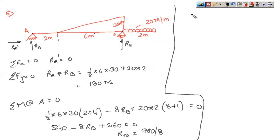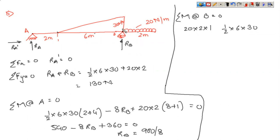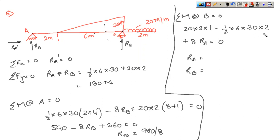Verification by taking moment about point B: the UDL 20 into 2 into 1 is clockwise so positive; the UVL half into 6 into 30 resolved at 2 meters from B is anti-clockwise so minus; plus 8 RA equals zero. Solving gives the same values of RA and RB confirming the answer. You can write the equations in any possible manner and arrive at the same solution.